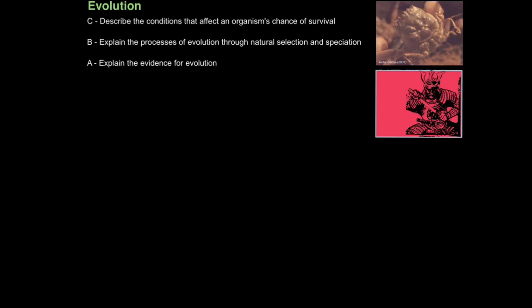Today we're going to learn about evolution and the evidence that supports this theory. The first aim is to describe the conditions that affect an organism's chance of survival. Then we're going to explain the processes of evolution through natural selection and the process of speciation, two different things. And finally we're going to look at the evidence that supports evolution.